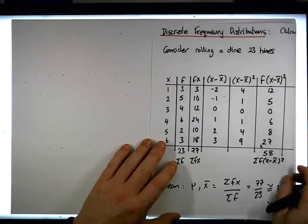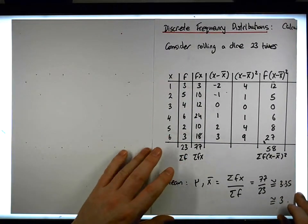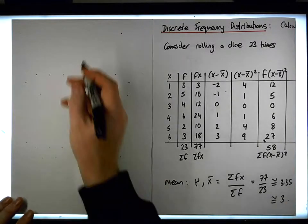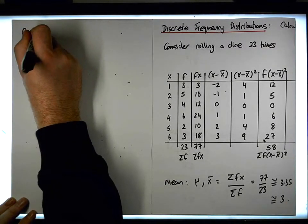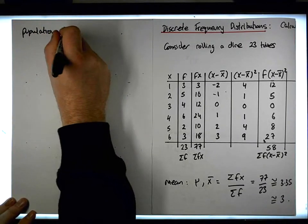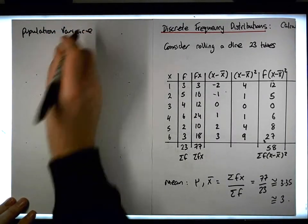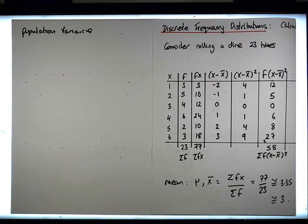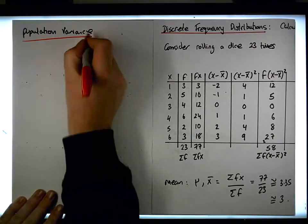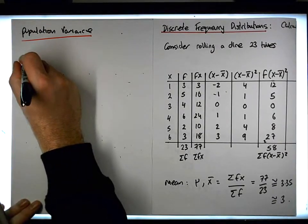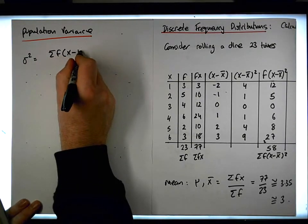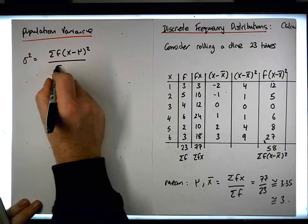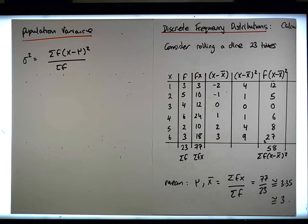What about if we wanted to calculate population values? The population variance — sigma squared — is the sum of the frequencies times x minus mu squared, divided by the sum of the frequencies. So it's just divided by the sum of the frequencies, not reduced by 1.